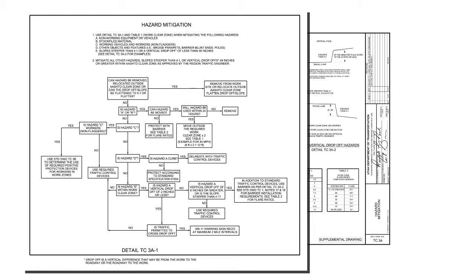Let's go over Detail TC3A-1. Here is where you determine the type of hazard and how to handle it. A Type A hazard is non-working equipment or vehicles. A Type B hazard is stockpiled material. A Type C hazard is a working vehicle or workers which do not include flaggers. Type D hazard is other objects and features such as bridge parapets, barrier blunt ends, and poles. Type E hazard is slopes steeper than 4 to 1 or vertical drop-off of less than 48 inches.